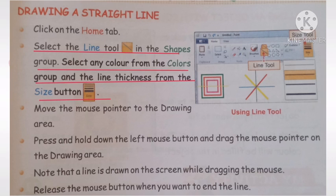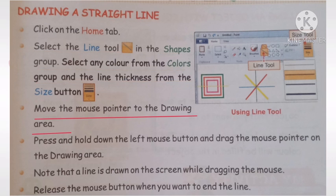As we learned in the last class, if we use any shape we can change the color and thickness — we will follow the same rule. First we will click on the home tab, then we will select the line tool which is available in the shapes group. After selecting the line tool, we will go to the color group, then select the size button and decide how much thickness the line will have. Then we will move the mouse pointer to the drawing area.